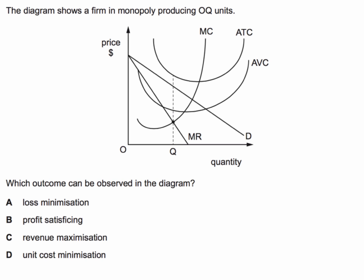So this is a question about monopoly pricing, and we're asked what outcome can be observed in the diagram from the output OQ. The correct answer to this question is A: loss minimisation. Here's the explanation for it.